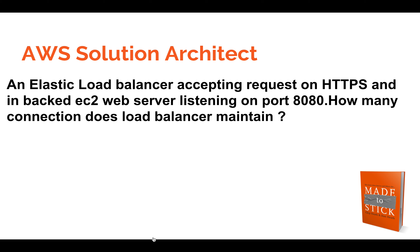The scenario is: an elastic load balancer is accepting requests on HTTPS, and in the backend the EC2 instance web server is listening on port 8080. The listener is configured for HTTPS on port 443, and the backend web server is on port 8080.